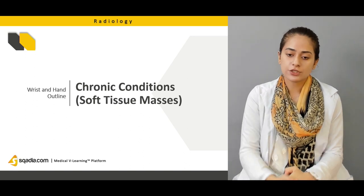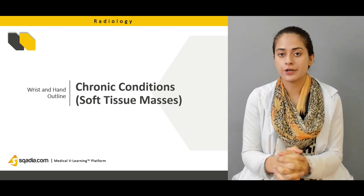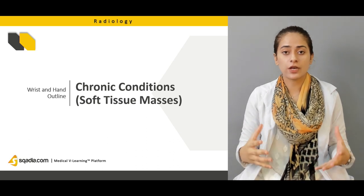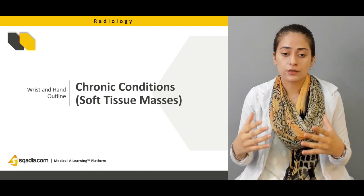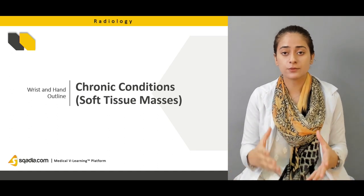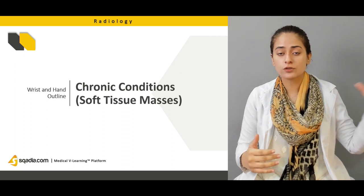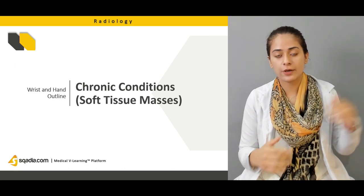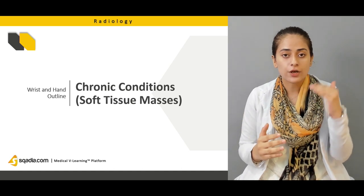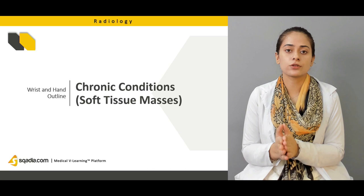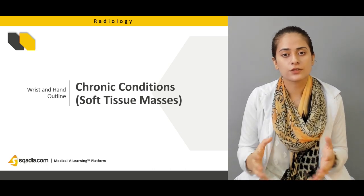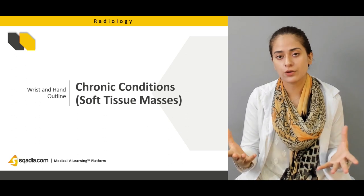Now we'll talk about chronic conditions. Chronic conditions are due to some underlying long-term disease or process that has been going on for a long period of time. All of the previous conditions — the fractures, tears, and related injuries — were acute conditions. Now we're going to look into some soft tissue masses and how they appear on radiographs.